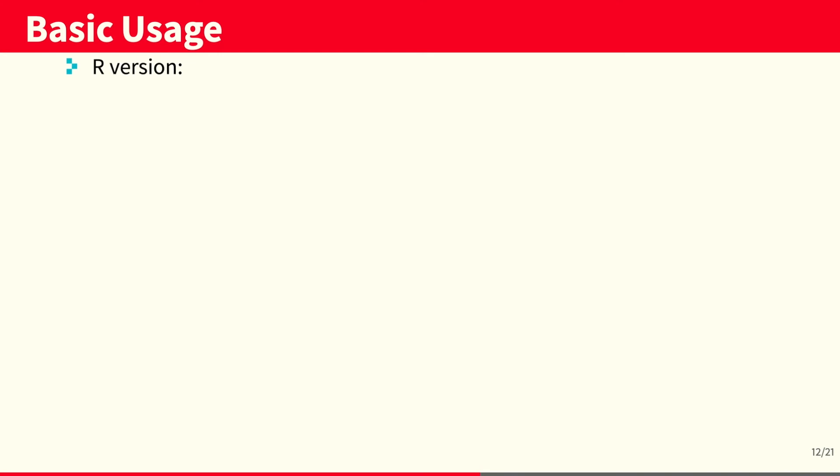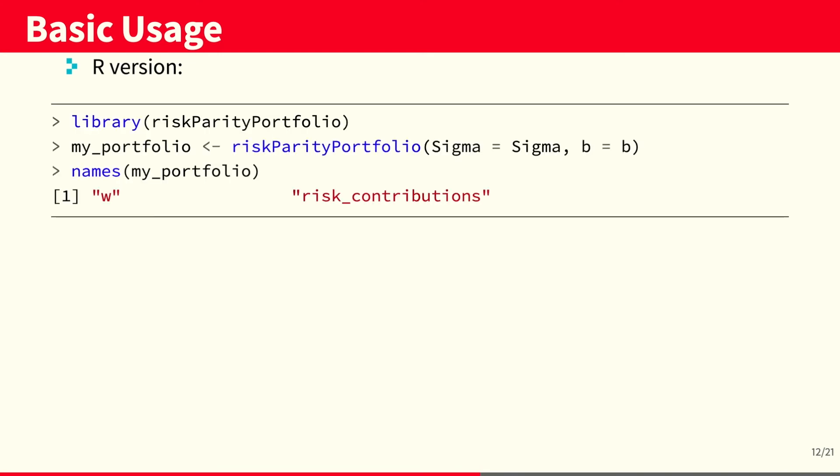Now, let's take a look at the basic usage. In R, we would first use the library function to load the library risk parity portfolio. And then we would use the risk parity portfolio function, passing as arguments the covariance matrix and the risk budget vector.